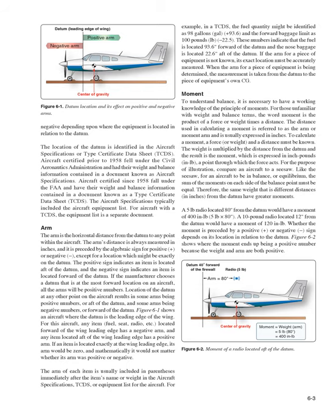For example, in a TCDS the fuel quantity might be identified as 98 gallons at +93.6, and the forward baggage limit is 100 pounds at −22.5. These numbers indicate that the fuel is located 93.6 inches aft of the datum and the nose baggage is located 22.5 inches forward of the datum. If the arm for a piece of equipment is not known, its exact location must be accurately measured. The measurement is taken from the datum to the piece of equipment's own CG.